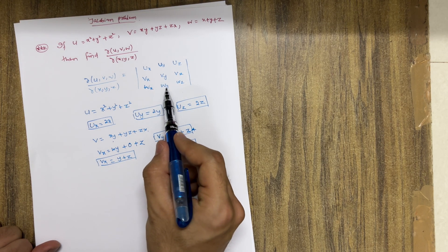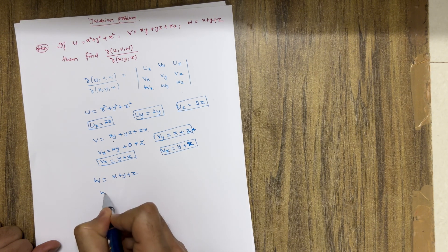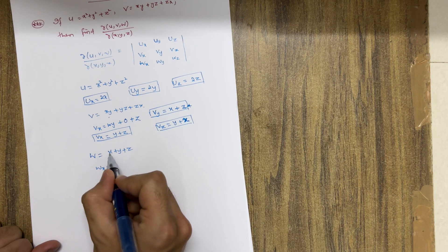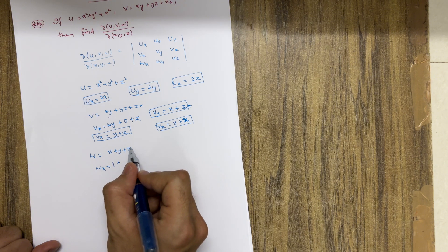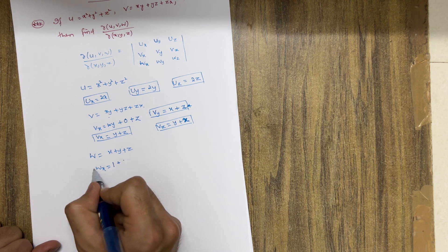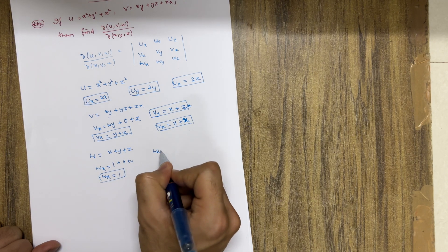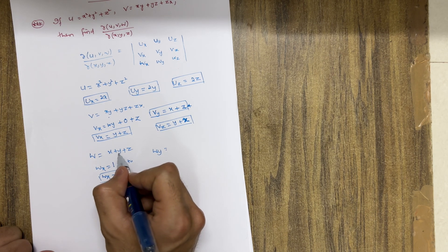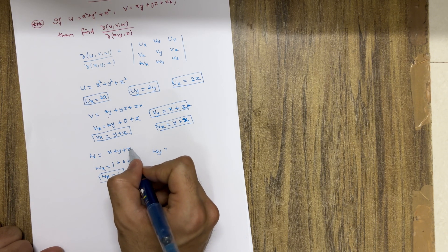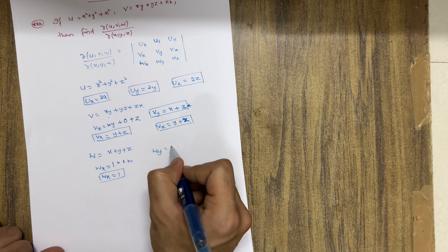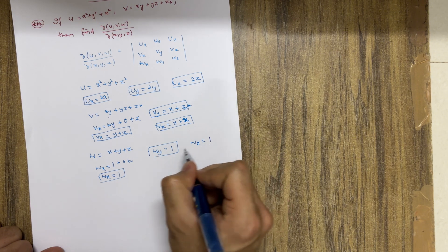Now we calculate wx, wy, and wz, where w = x + y + z. Differentiating with respect to x: wx = 1. Differentiating with respect to y: wy = 1. And differentiating with respect to z: wz = 1.